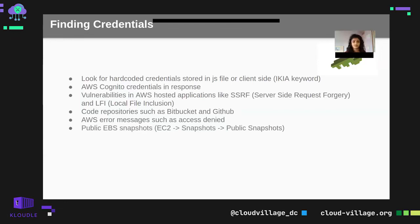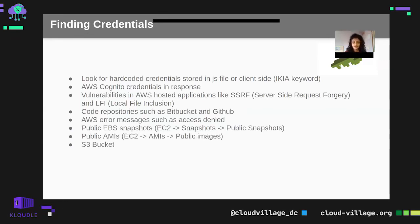Publicly accessible EBS snapshots. AMI-related credentials leaked in public images. S3 buckets — sometimes organizations store employee credentials or admin credentials in S3 buckets, which is again an issue. We'll discuss in upcoming slides how you can find those.